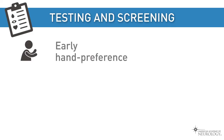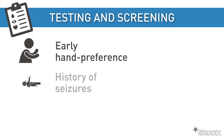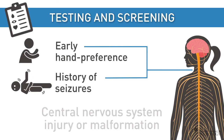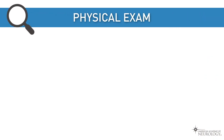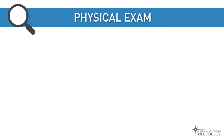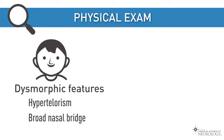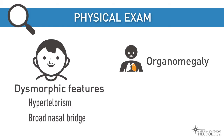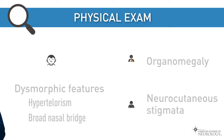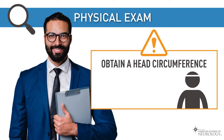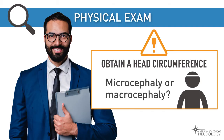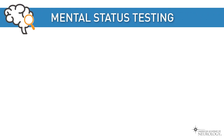Early hand preference and history of seizures may suggest central nervous system injury or malformation. On physical exam, look for dysmorphic features, organomegaly, and neurocutaneous stigmata. Obtaining a head circumference is important, as the presence of micro- or macrocephaly can help dictate diagnostic testing.